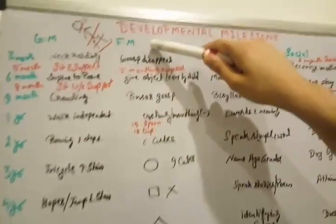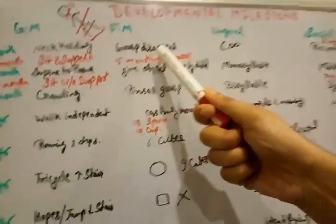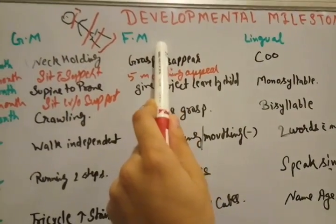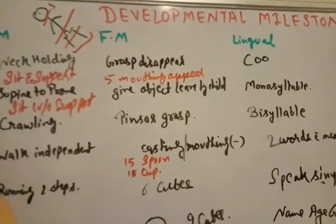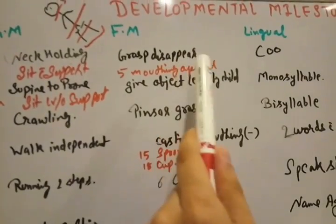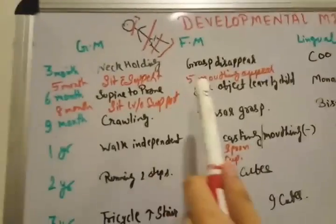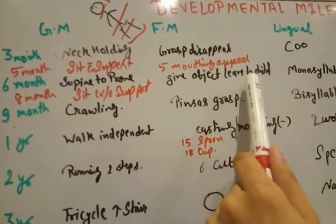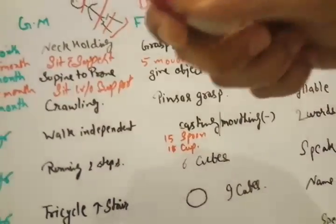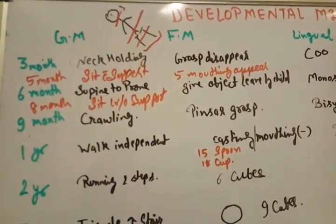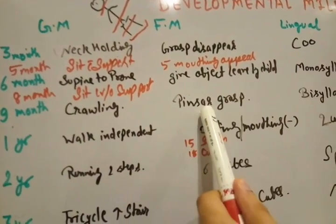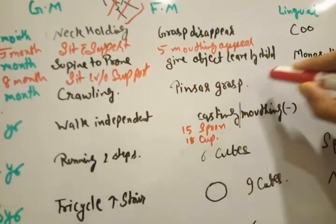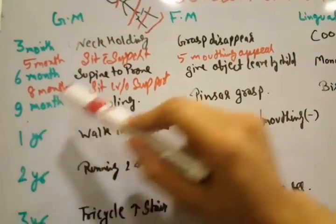Fine motor development means grasp disappear. During birth there is a grasp appearance, but at 3 month age grasp disappears. Grasp means holding capacity. At 6 month of age, give object and leave by child. If you give this pen, if I give you this way, he loses - object leave by the child.